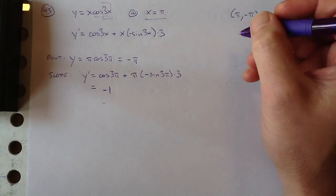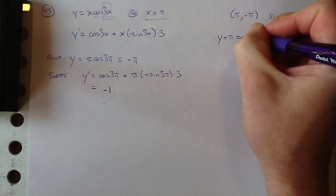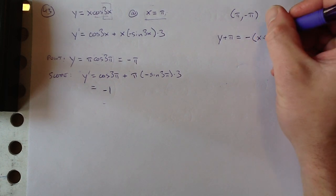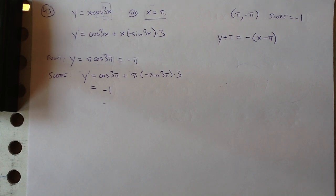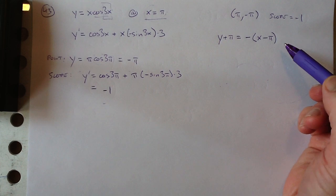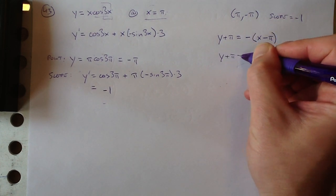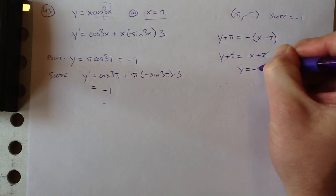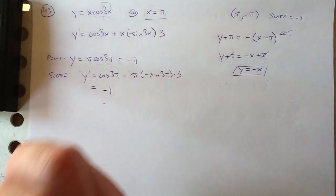In point-slope form: y minus negative pi equals negative 1 times x minus pi. Simplifying: y plus pi equals minus x plus pi. Those cancel, so it's actually just the line y equals minus x.